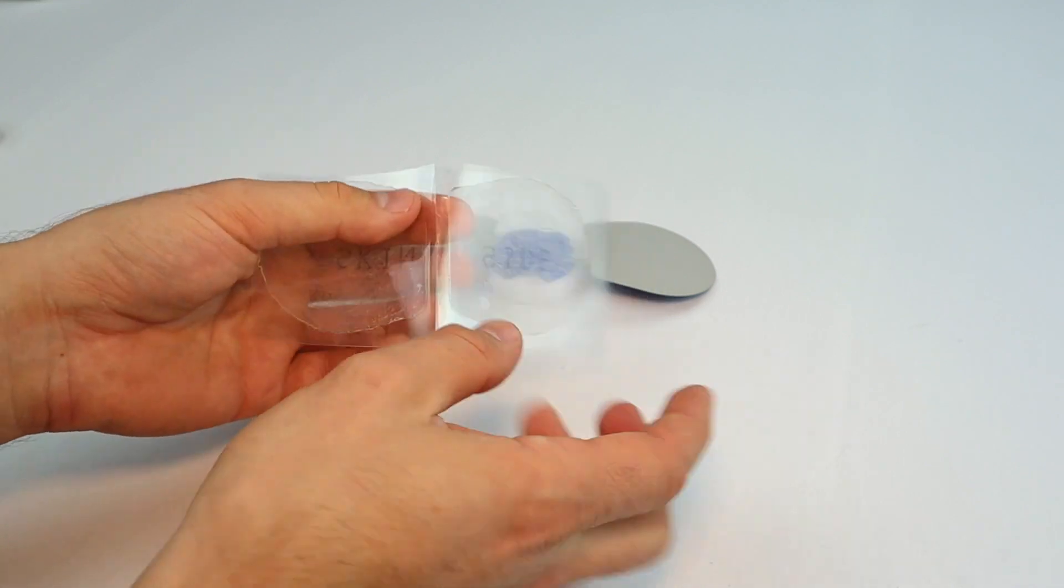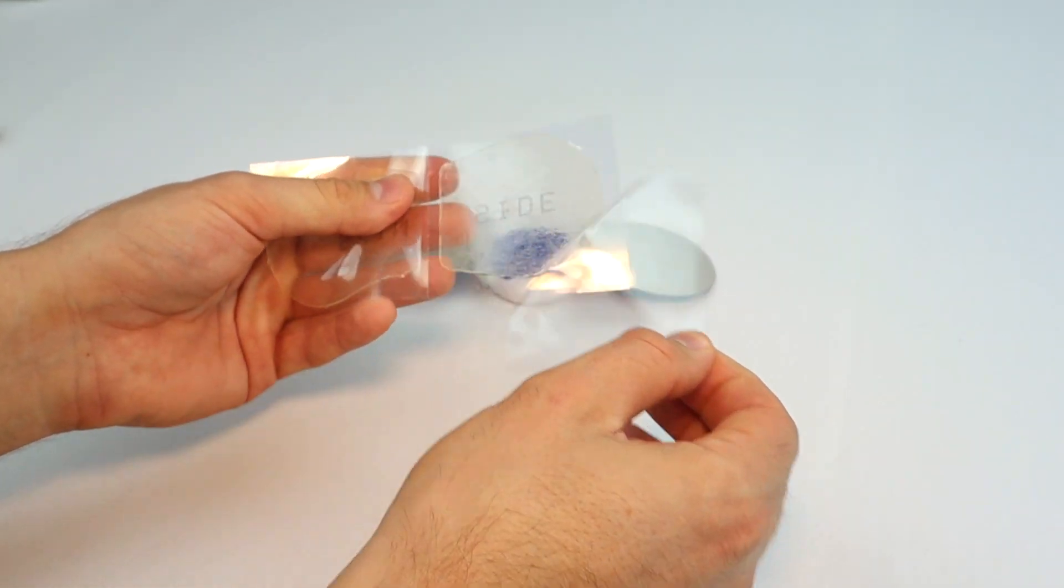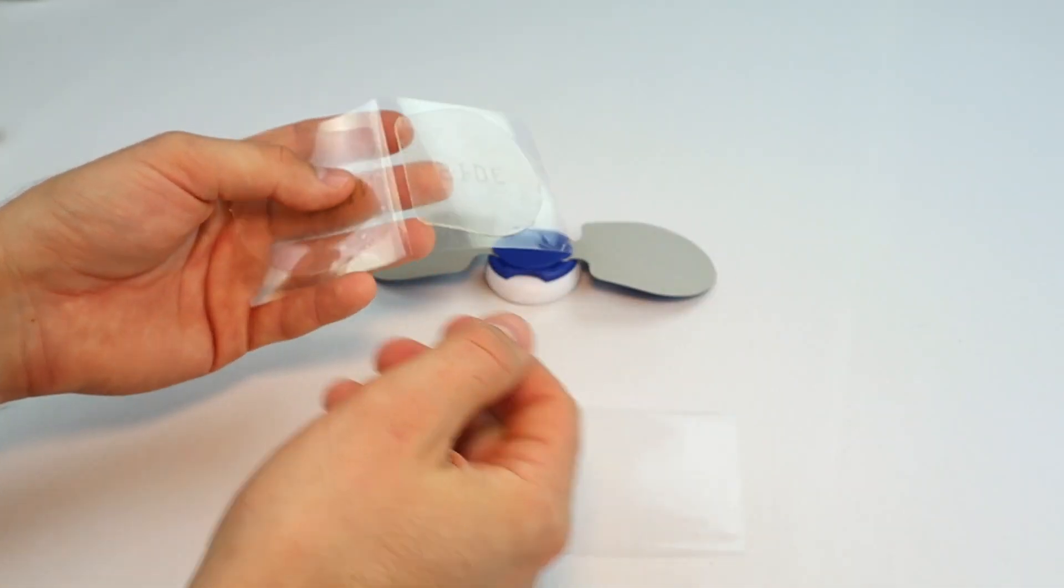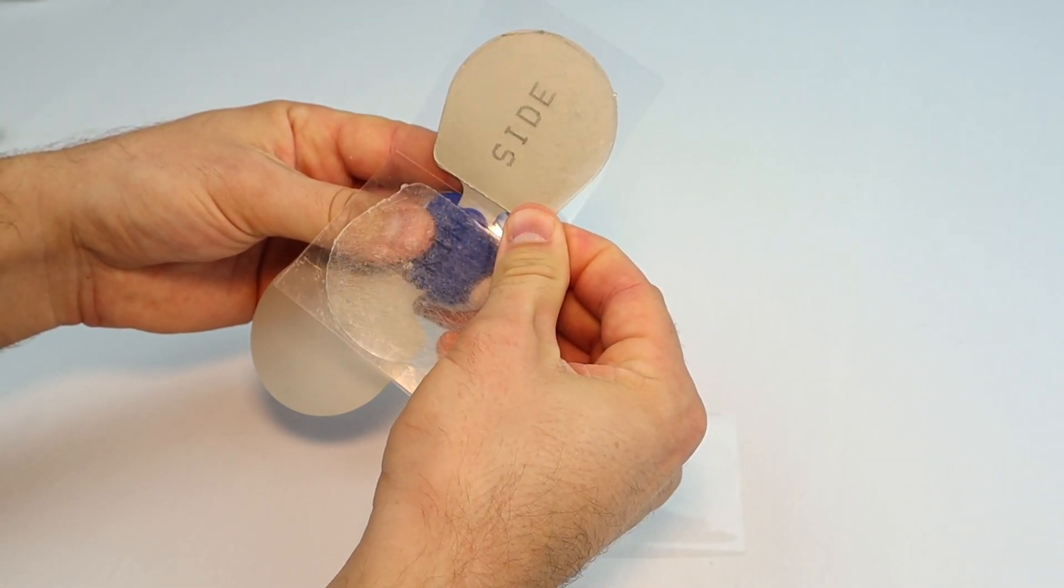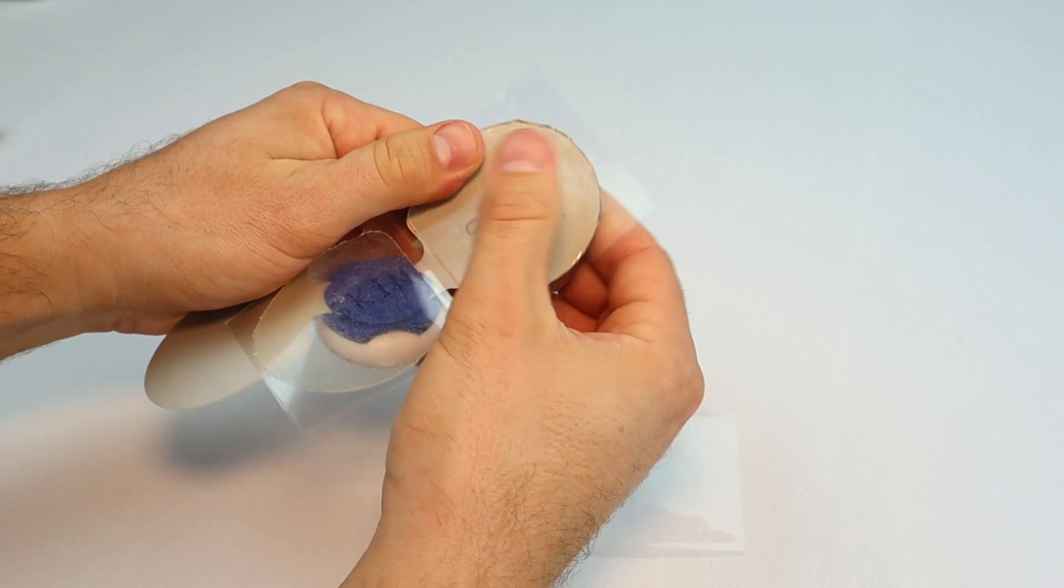What you want to do is flip it over, peel off the plastic to expose the sticky side, then line it up with the wing, put it on, and press it firmly.